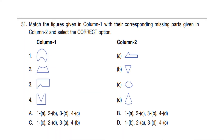Question number 31. Match the figures in column 1 with their corresponding missing parts in column 2 and select the correct option. Shape 1 is connected to C, shape 2 is connected to D (as that part fits there), shape 3 is connected to A, and shape 4 is connected to B. So the correct answer is option C.